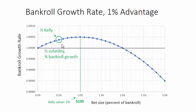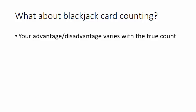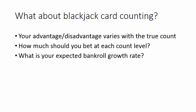Astute card counters often aim for one-half Kelly — for example $50 per bet — because it has half the volatility of the full Kelly bet but three-fourths of the bankroll growth rate, giving more safety with almost the same growth rate. So what about applying the Kelly Criterion to blackjack card counting? Your advantage and disadvantage varies with the true count. How much should you bet at each count level, what is your expected bankroll growth rate overall, and how big a bankroll do you need for a given bet size? The answers are in part two of this presentation.